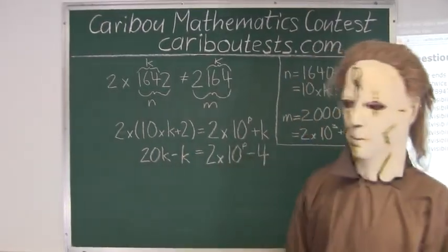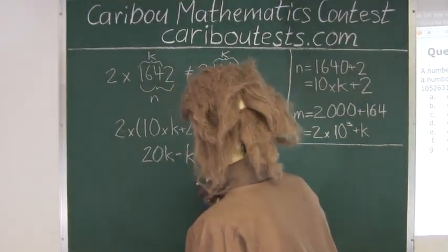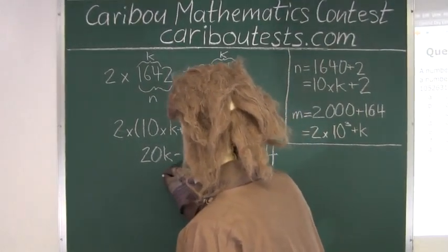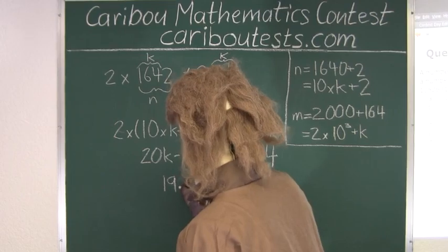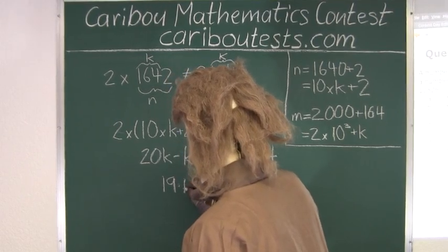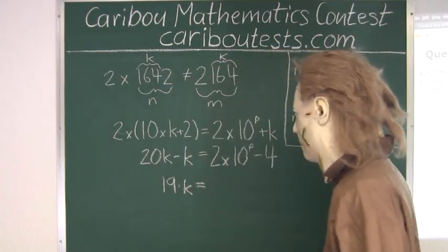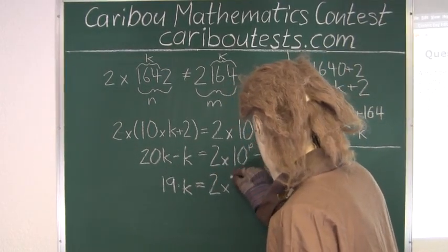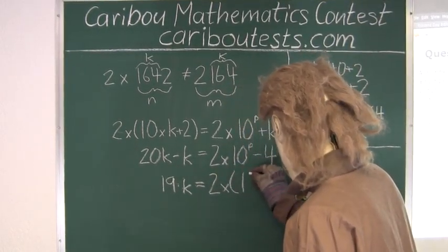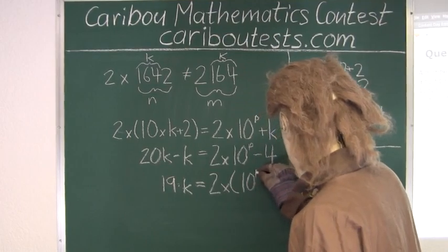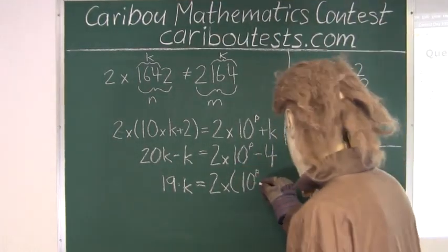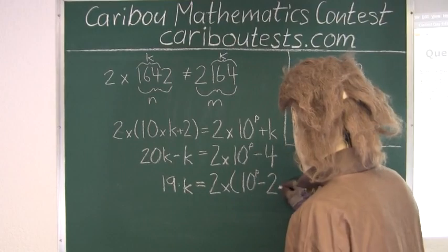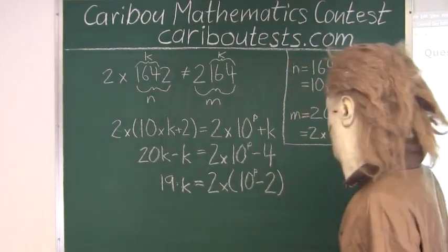So 20k minus k is 19k. And then we have 2 times, in brackets, 10 to the power of p minus 2.